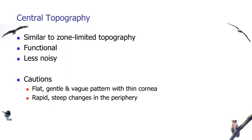The central topography of the IOLMaster is quite similar to a zone-limited full corneal topography. This is one of the conclusions. It is very functional because as we grow older our pupils get smaller, and this is the zone that is relevant. It is less noisy than conventional tomography because the resolution is probably less, but in a way it is good because it gives us a cleaner picture.